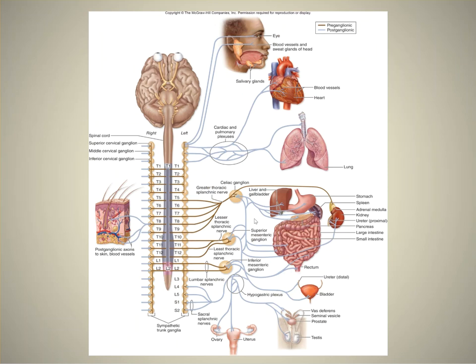Slide 9 shows the same view for the sympathetic nervous system. You can see all of the same organs are innervated — most organs are dual innervated by both divisions. Brown is preganglionic and blue is postganglionic. It's a little more complicated in the sympathetic nervous system because there are several different types of ganglia that the preganglionic axon could go to.